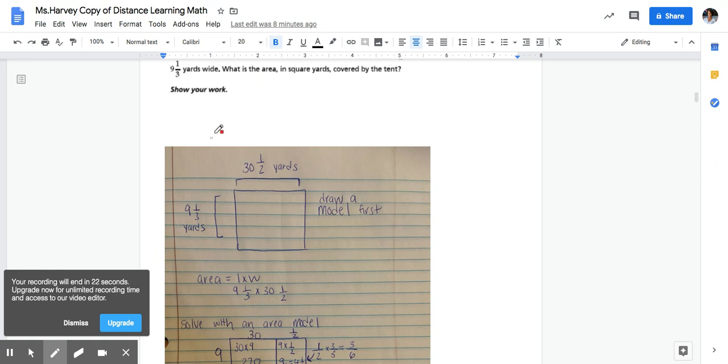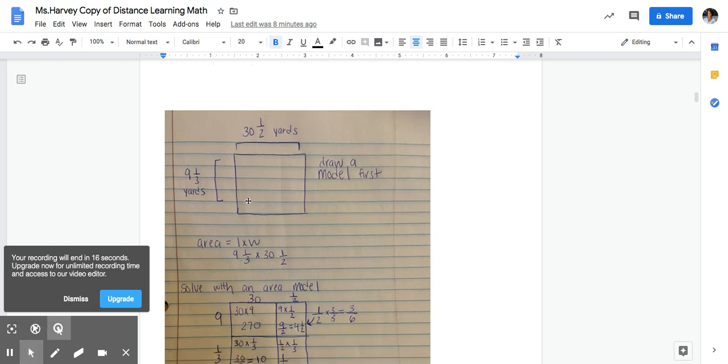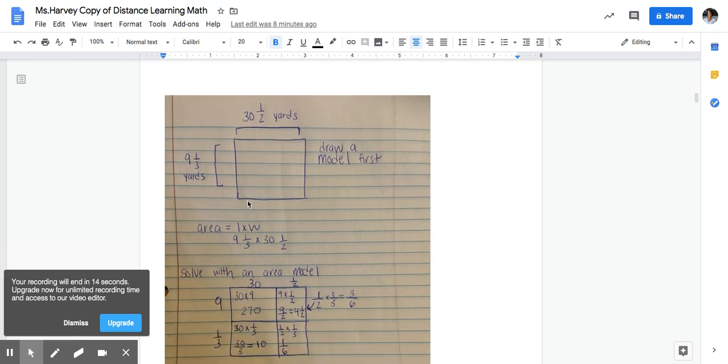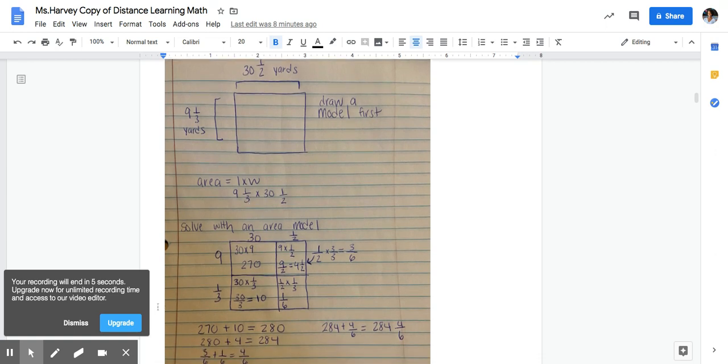I know that area is length times width, so I am going to now plug in those numbers in order to find the area: 9 and one third times 30 and one half. In the next video I'll walk you through how to solve this.